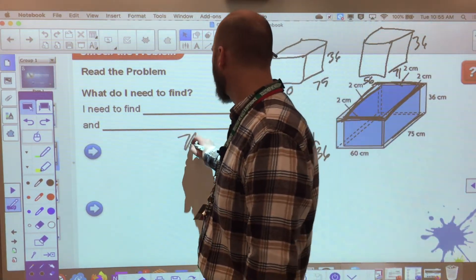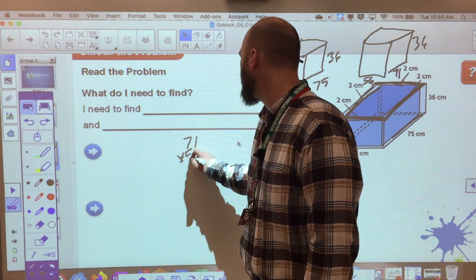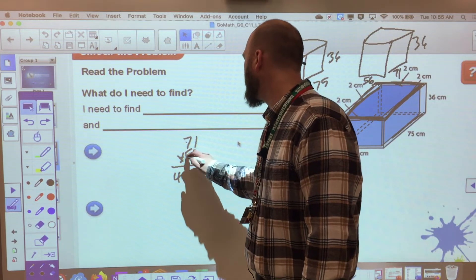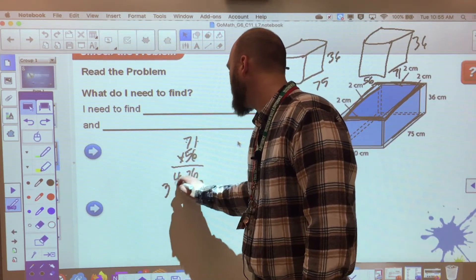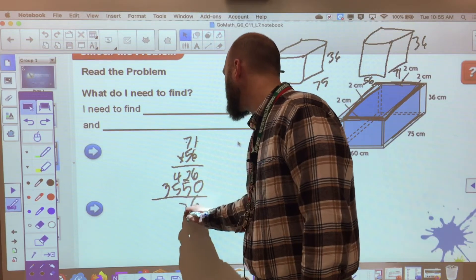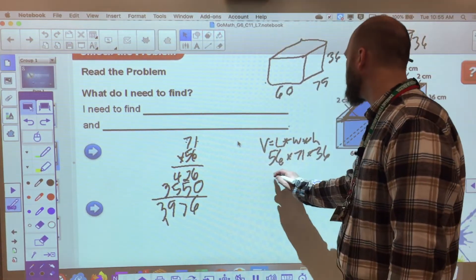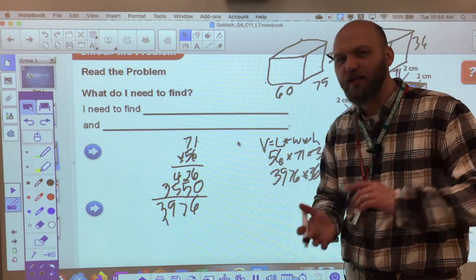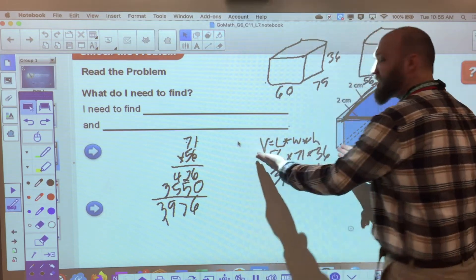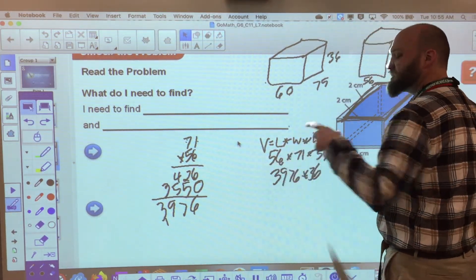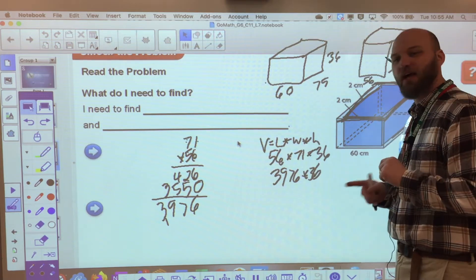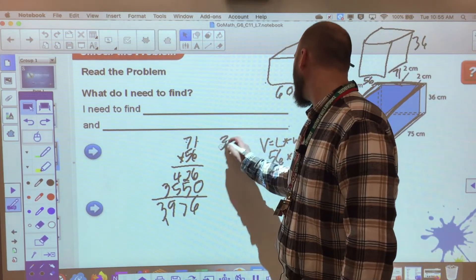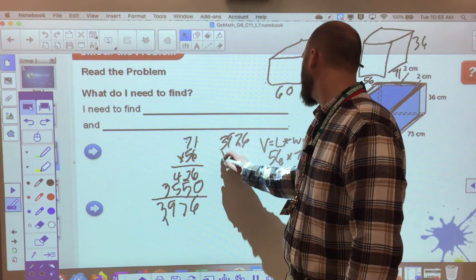I don't know what that is, so I have to come over here and solve it. 71 times 56. 6 times 1 is 6. 6 times 7 is 42. Add a 0 for a placeholder. 5 times 1 is 5. 5 times 7 is 30. 5, 6, 7, 9, 3. I get 3,976. Times 36. Now, if you had a calculator and you were checking this, this would be the bare minimum of what I'm looking for. So that you know what 56 times 71 is. You made a mistake in your calculator, you can see it. You can check it. You don't want to just jump through and say put all these numbers together.